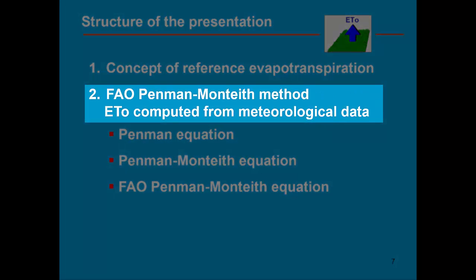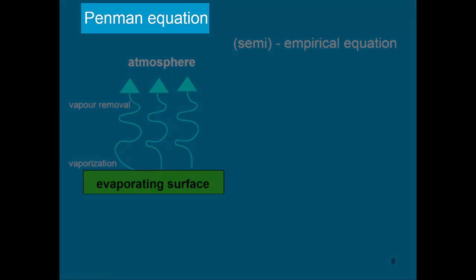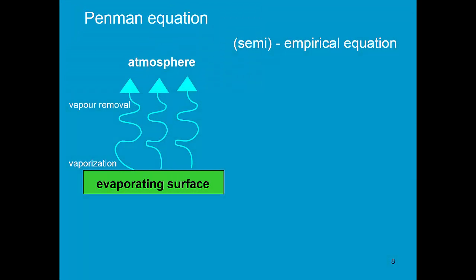This second part focuses on the way ET₀ is computed from meteorological data. It is done by means of the standard FAO Penman-Monteith method. Penman, as a physicist, developed an equation to describe the vaporization of liquid water and the vapor removal to the atmosphere.